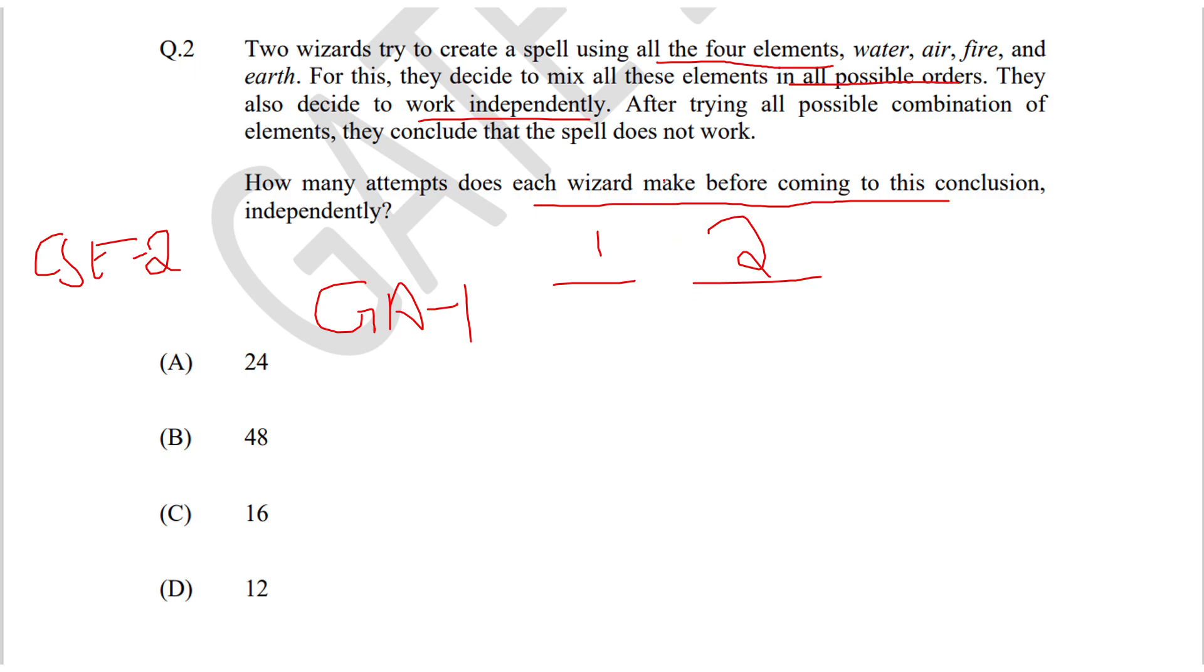Since they have used all the possible orders, both of them will have the same number of combinations. Hence, if you calculate anyone, you will get the final answer. They have combined all the four elements in all the possible combinations.